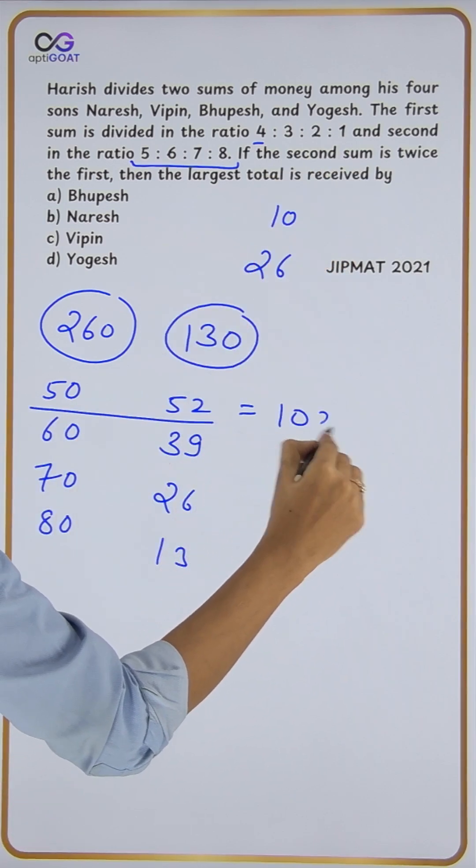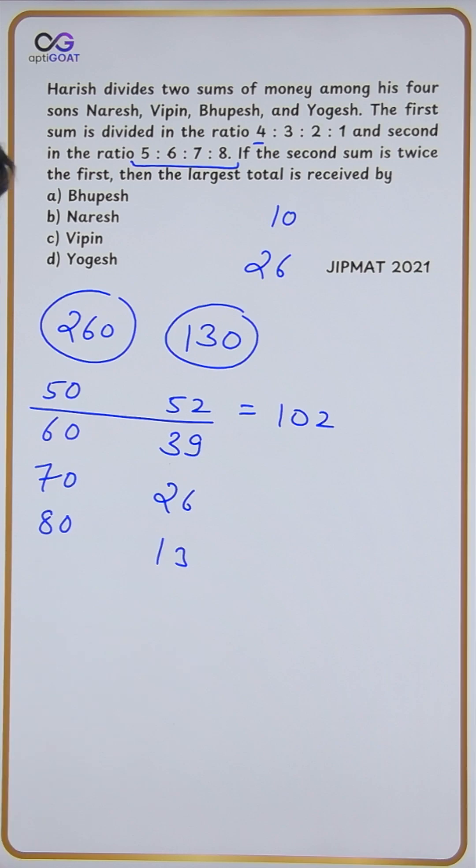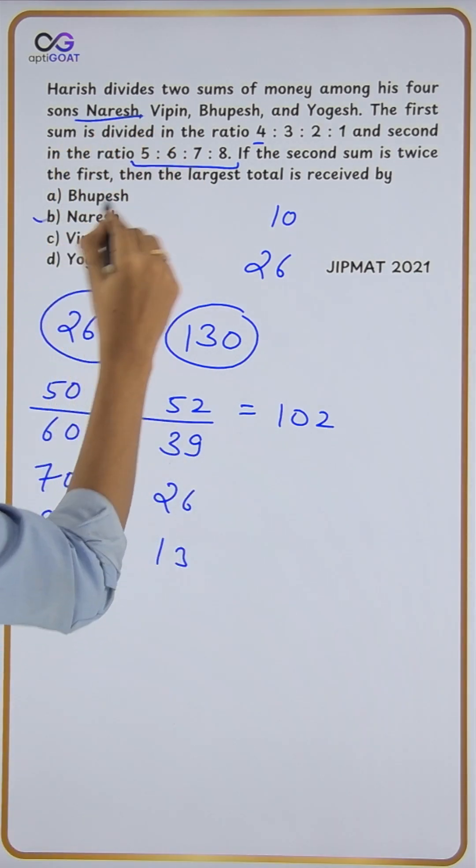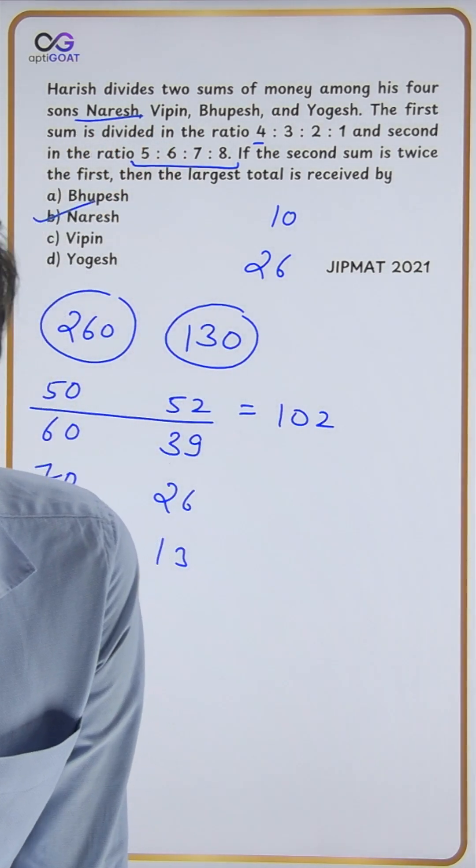When we total these, the highest is 102, and that is for the first person. That person is Naresh, so the answer is option B. This is how we can solve the question very effectively. Thank you.